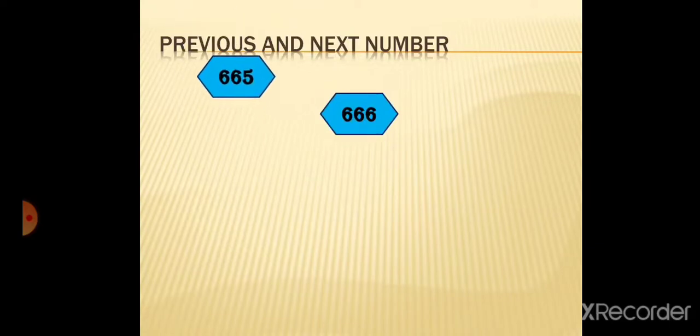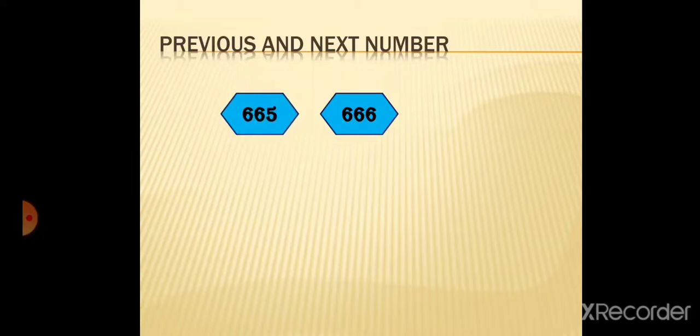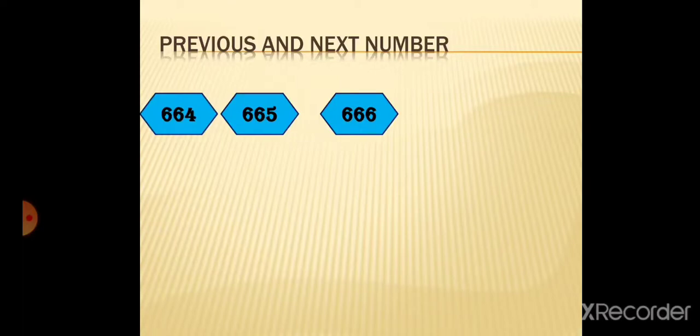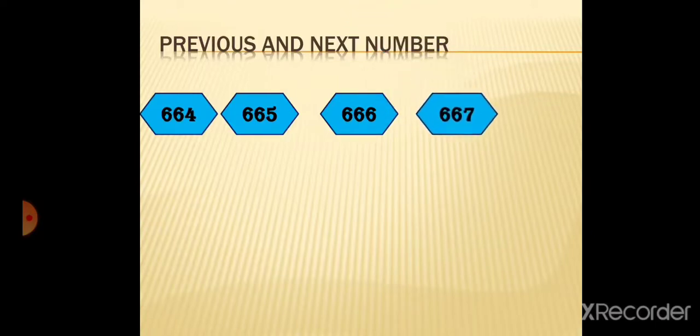The number given to you is 666. For the previous number, you subtract 1 from 666: 666 minus 1 gives 665, and 665 minus 1 gives 664. So the two previous numbers of 666 are 665 and 664.